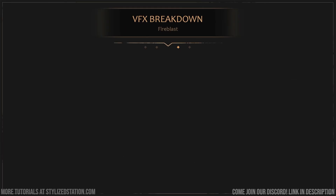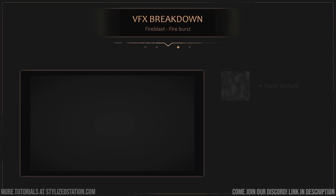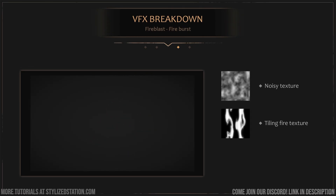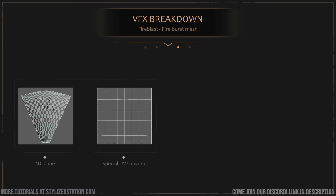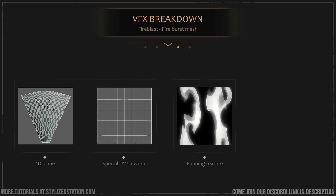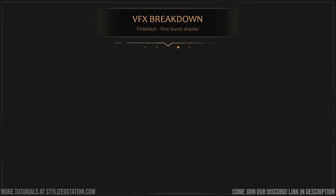Within the fire blast effect, we have two interesting elements to analyze: the fire burst mesh and the fire burst shader. For the burst mesh, we'll need a noisy texture, a tiling fiery texture like we did for the energy accumulation aura, and a special 3D mesh. We'll make a 3D plane with the shape of our choice and apply a special linear UV unwrap with UV distortion at the top and at the bottom of it. We make the texture move alongside our UVs, giving us a 3D mesh with texture distortion directly set up in our UVs. We are now going to make a passive moving opacity mask on our flame burst effect.